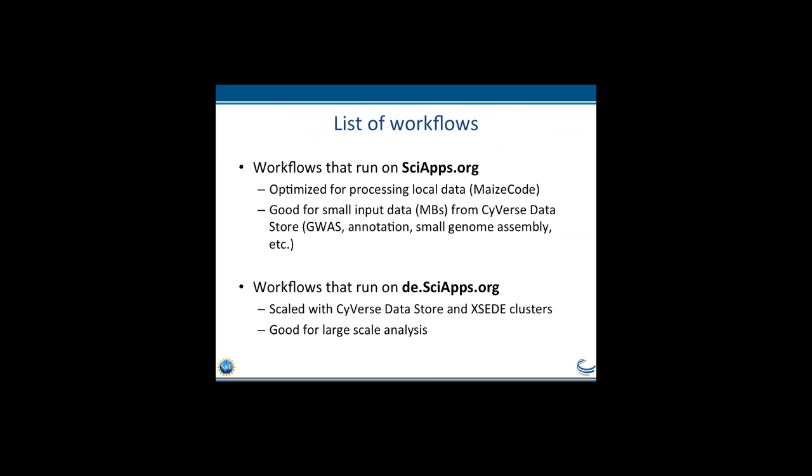We have workflows that run on SciApps.org and workflows that run on de.SciApps.org. The same workflow is kept separate because they are optimized for different things. SciApps.org is optimized for processing local data, like the MazeCode project, and also good for the community when they have small input data from CyVerse Datastore — like GWAS annotation or small genome assembly that doesn't require moving large data across the country. de.SciApps.org is developed for large-scale analysis and scales well with CyVerse Datastore and the XSEDE cluster.